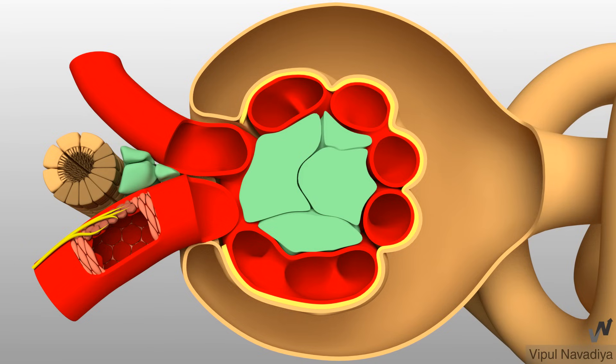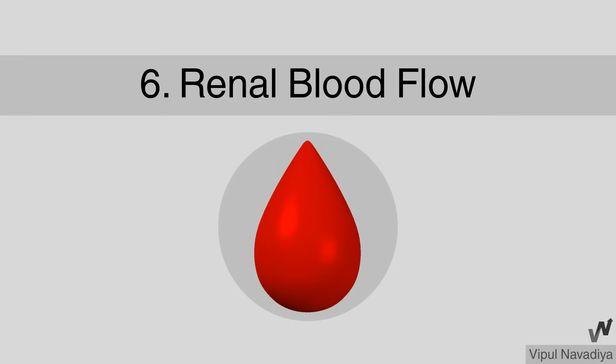This video completes the anatomical aspect of the renal system. From the next video, we will move towards the physiology of urine formation, starting with renal blood flow. Thank you.